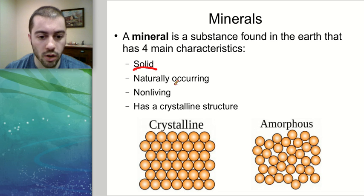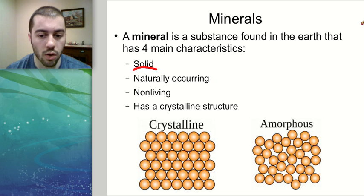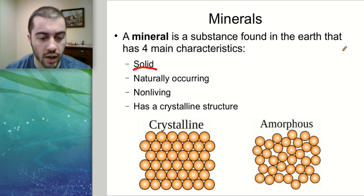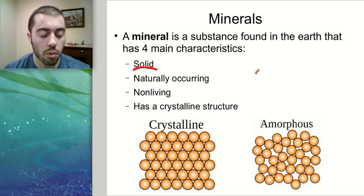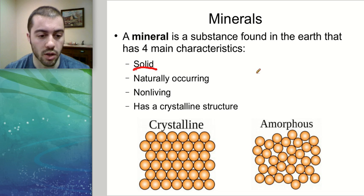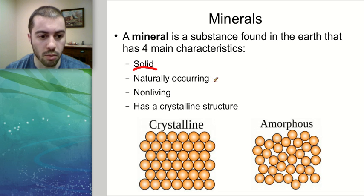It needs to be naturally occurring, meaning it needs to be found in nature on its own without any man-made aspect to it. For example, plastics — we make those from oil — are not minerals because they're man-made. So it needs to be naturally occurring, something you can find in nature on its own.